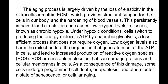The stiffening of the extracellular matrix and blood vessels persistently impairs blood circulation and causes low oxygen levels in tissues, known as chronic hypoxia. Under hypoxic conditions, cells switch to producing energy molecules — ATP — via anaerobic glycolysis, a less efficient process that does not require oxygen. Low oxygen levels also harm the mitochondria, the organelles that generate most ATP, and lead to increased production of reactive oxygen species — unstable molecules that can damage proteins and cellular membranes.